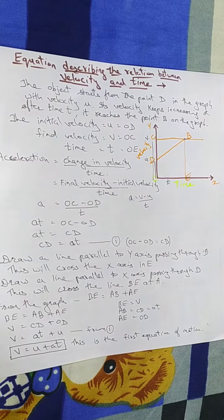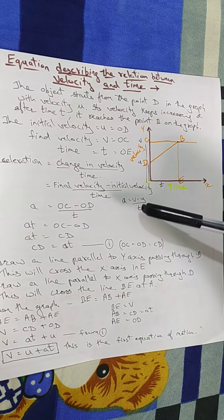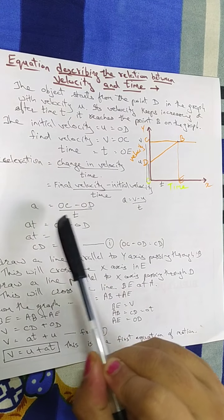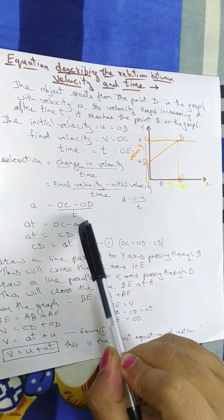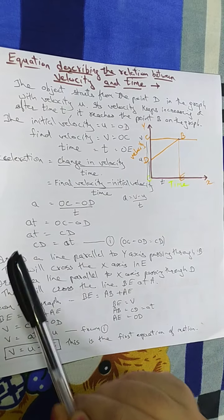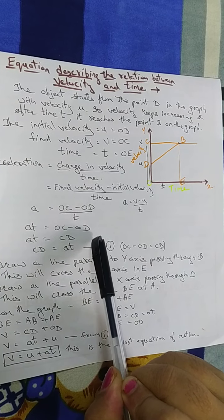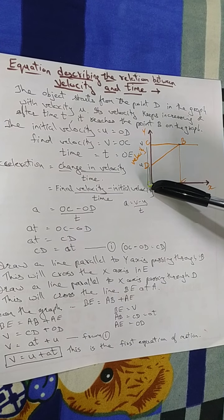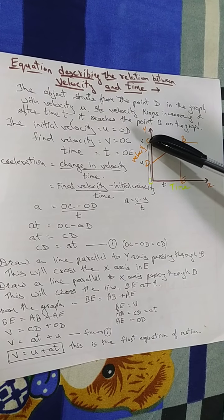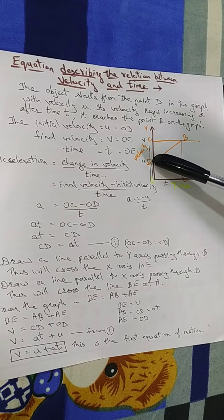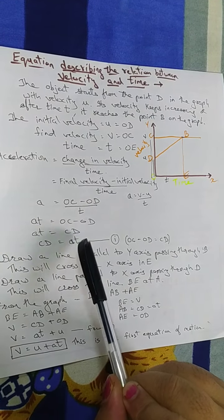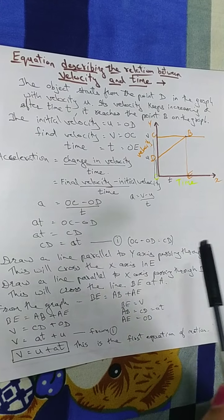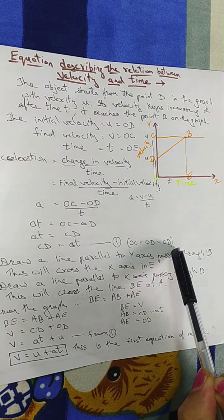Here the values of U and V are taken from the graph: OC is V and OD is U. So we get A equals OC minus OD divided by T. Multiplying both sides by T, we get AT equals OC minus OD. Since OC minus OD gives CD, we have AT equals CD. So CD equals AT and we have obtained the value for CD.